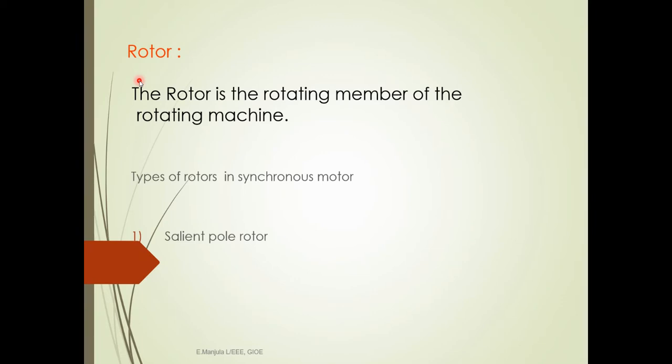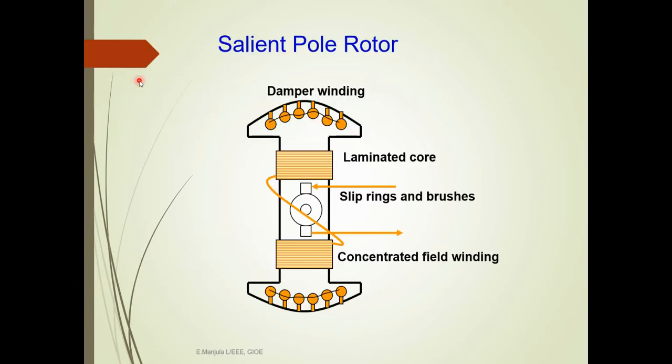Now we discuss about the rotor. The rotor is the rotating member of the rotating machine. The stator is a stationary part and the rotor is the rotating part. In a synchronous motor we have two types of rotor: the salient pole rotor, and the non-salient pole, which is also called the cylindrical type rotor.